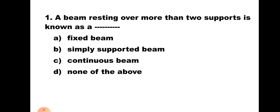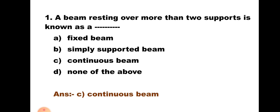Question number one. The beam resting over more than two supports is known as: A. Fixed Beam, B. Simply Supported Beam, C. Continuous Beam, D. None of the above. This is the definition of Continuous Beam — when the beam is supported over more than two supports, it is known as Continuous Beam. Hence the correct answer is C, Continuous Beam.